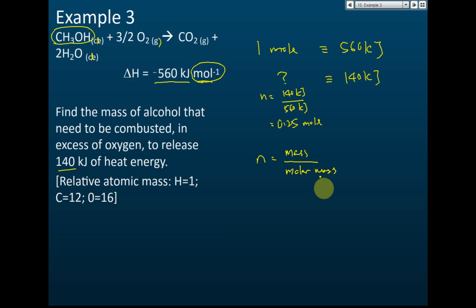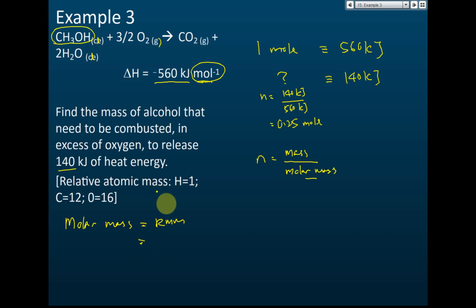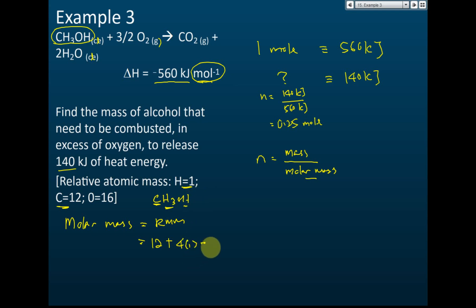To find the mass, we need the molar mass. The molar mass equals the relative molecular mass. For CH₃OH: one carbon is 12, four hydrogens is 4 × 1 = 4, and one oxygen is 16. So the molar mass equals 12 + 4 + 16 = 32 grams per mole.